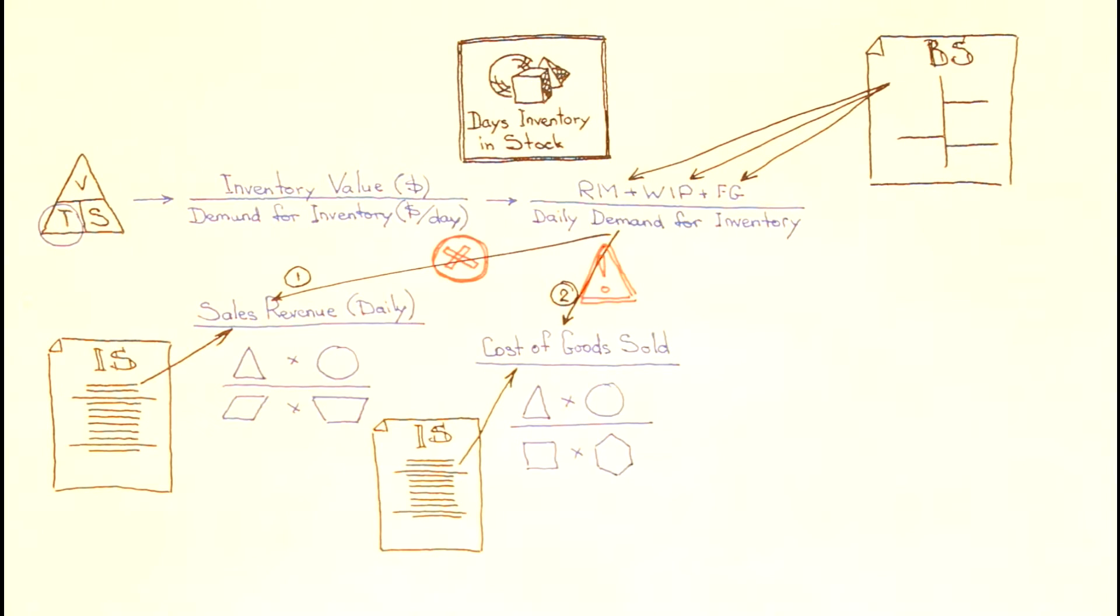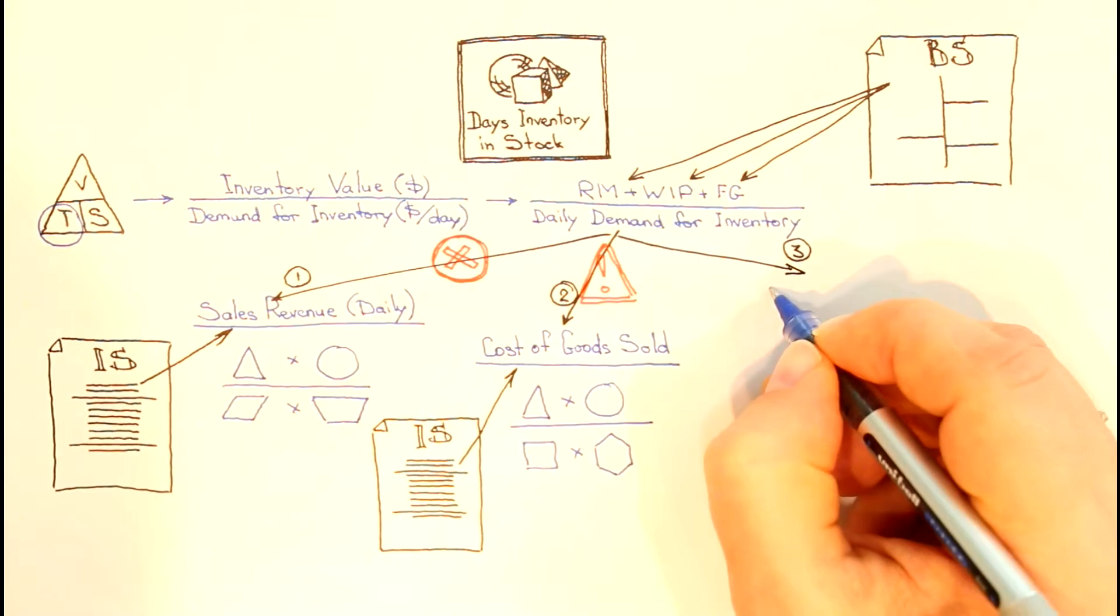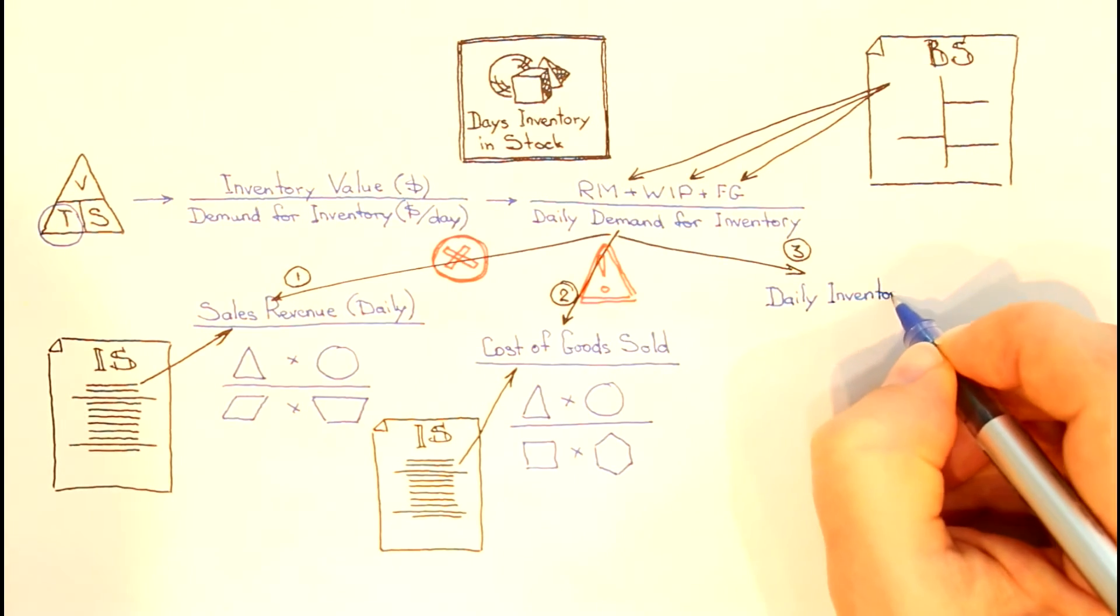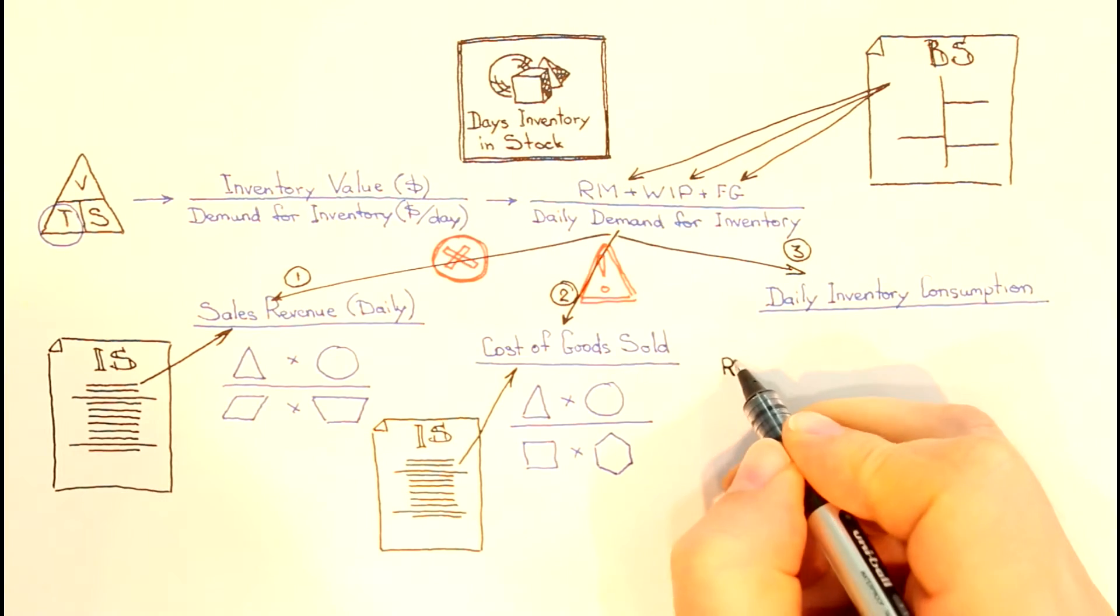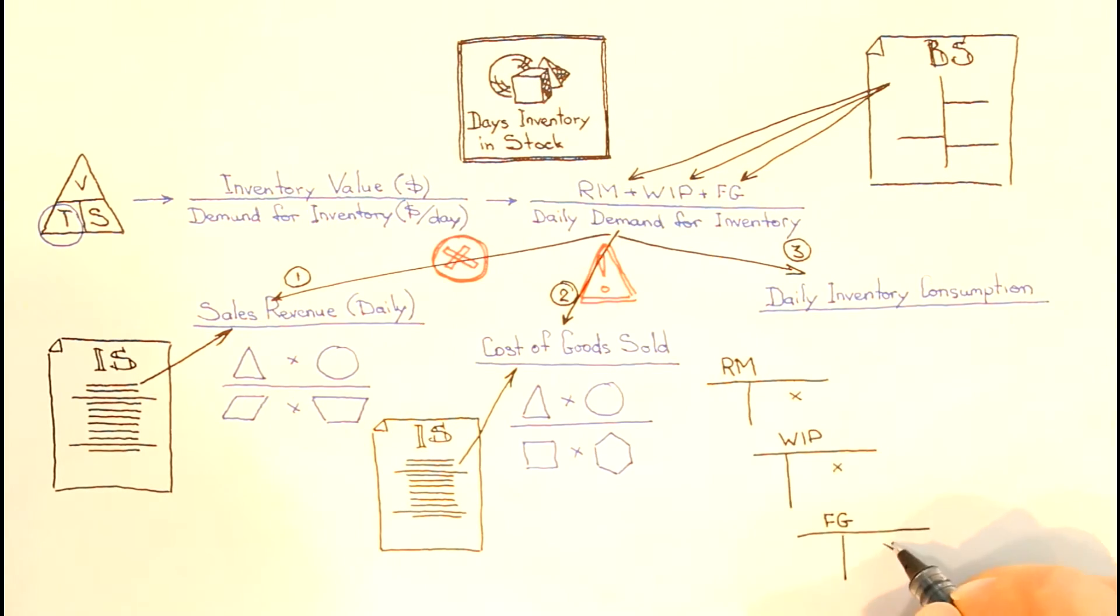The third method is usually available for insiders only. This one uses actual daily consumption of each component of the inventory. It can be extracted from the accounting journal entries of the company as credit amounts on raw materials, work-in-process, and finished goods accounts.